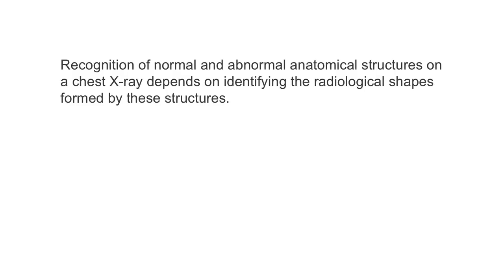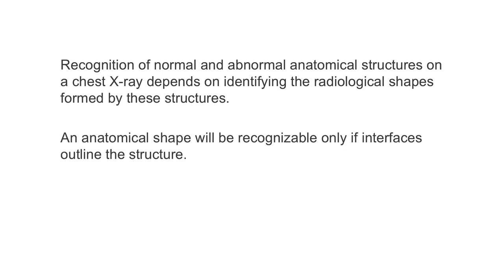In summary, recognition of normal and abnormal anatomical structures on a chest x-ray depends on identifying the radiological shapes formed by these structures. An anatomical shape will be recognizable only if interfaces outline the structure. An interface will only occur if there is enough density difference between structures that are adjacent to each other.